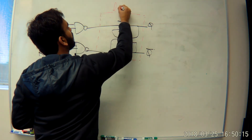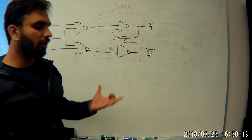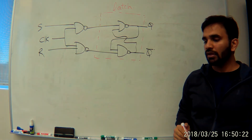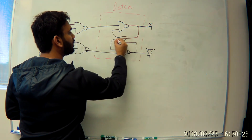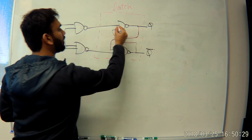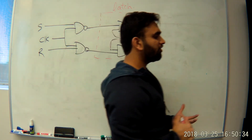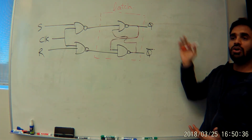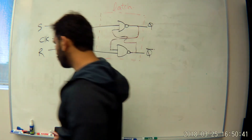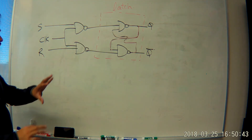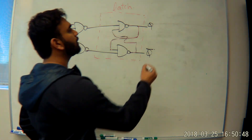This part is called the latch — all flip-flops have a latch in them. What this part does is store one bit of data. The latch stores a value of one bit, and the rest of the circuit allows it to change to the next state or keep the same value, however you design it.